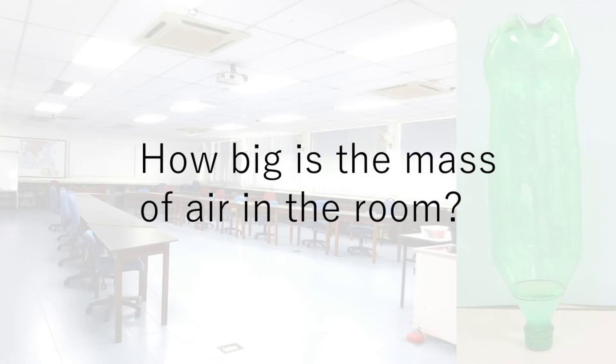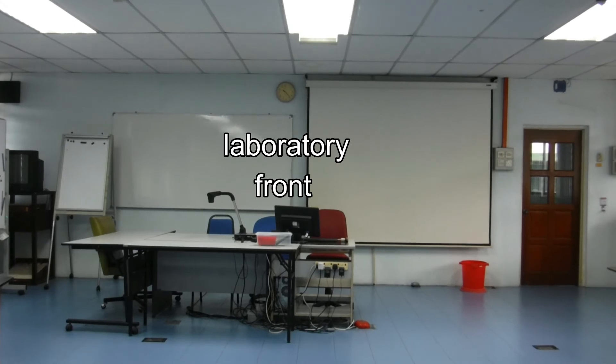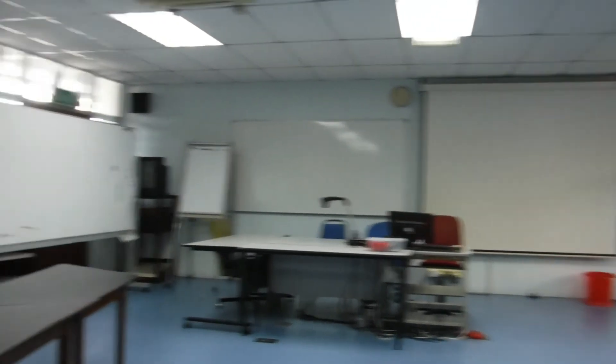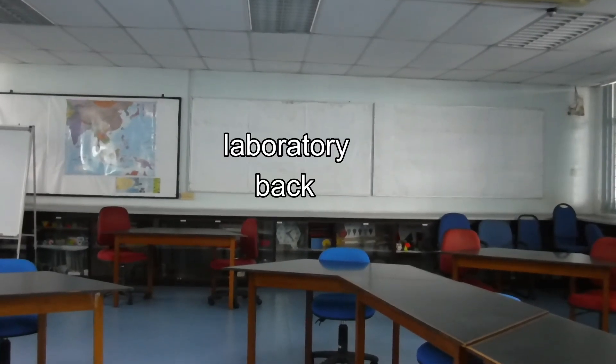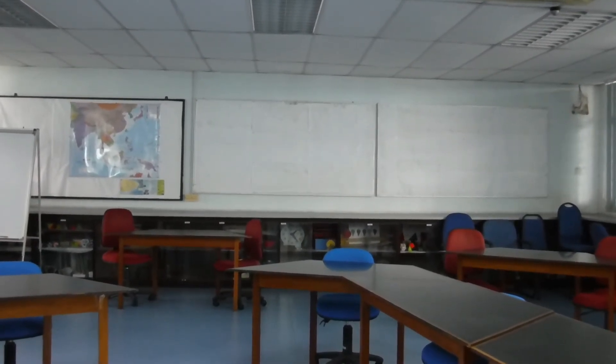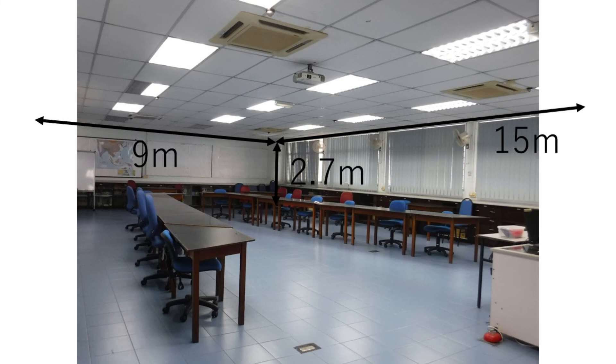How big is the mass of air in the room? Let's calculate the mass of air in the laboratory. The width of the laboratory is 9m, the length is 15m, and the height is 2.7m.